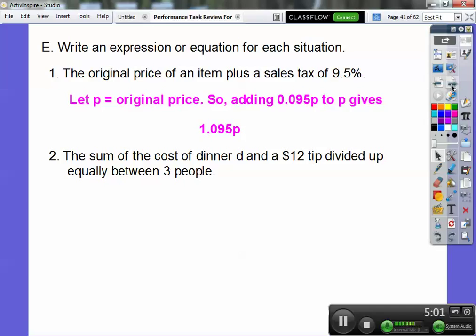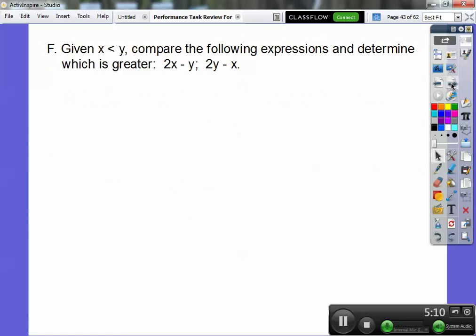The sum of the cost of dinner and a $12 tip divided by 3. That's d plus 12, all over 3.